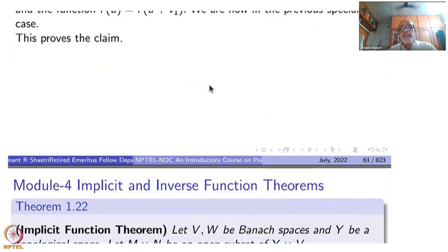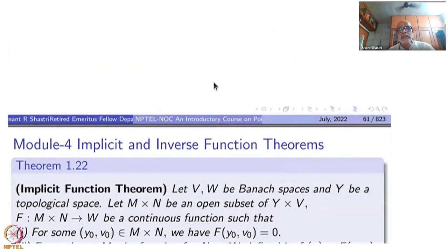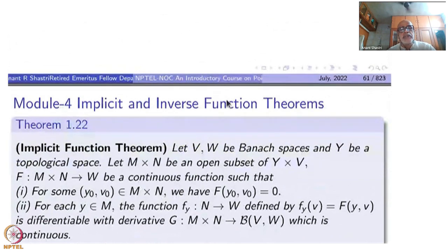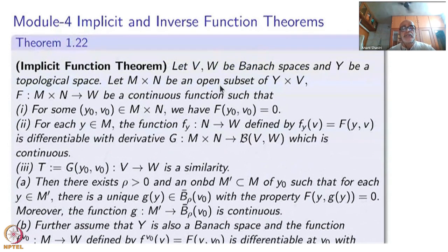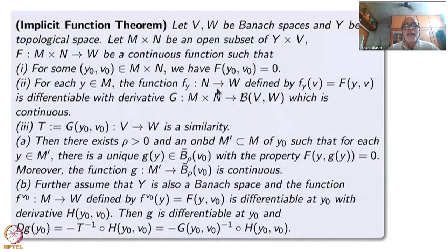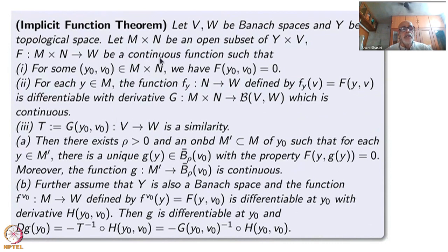Next time we shall prove the implicit function theorem. Just for the sake of what we are up to, I will begin the statement now and prove it next time. The statement itself is somewhat long, though the proof is not as difficult. The first part sets up the hypotheses: V and W are Banach spaces, and Y is any topological space.